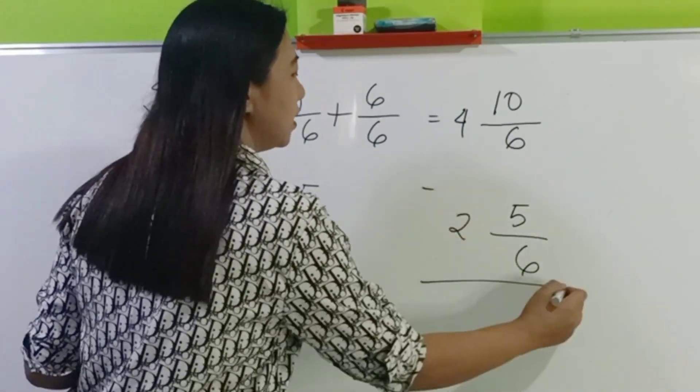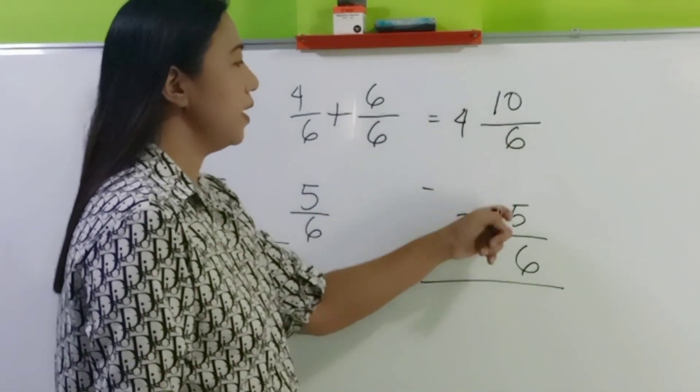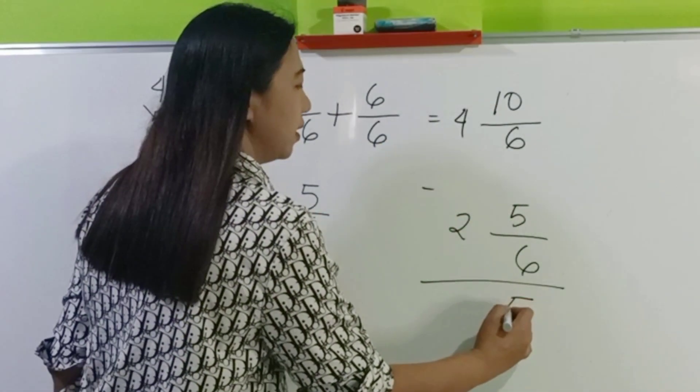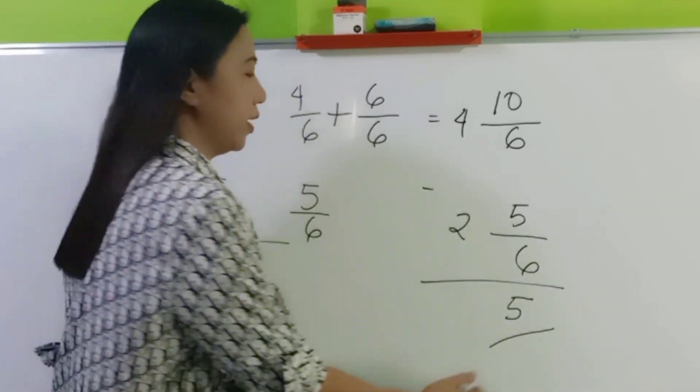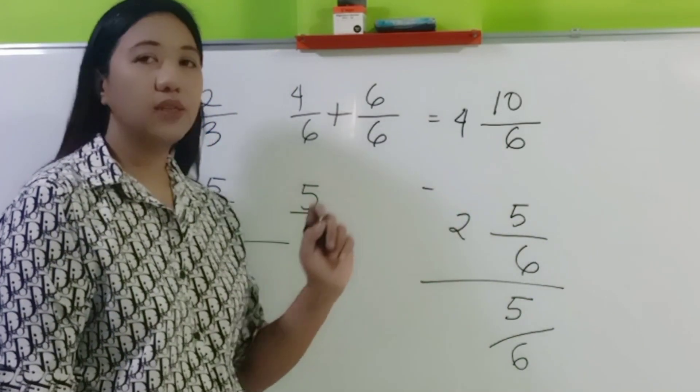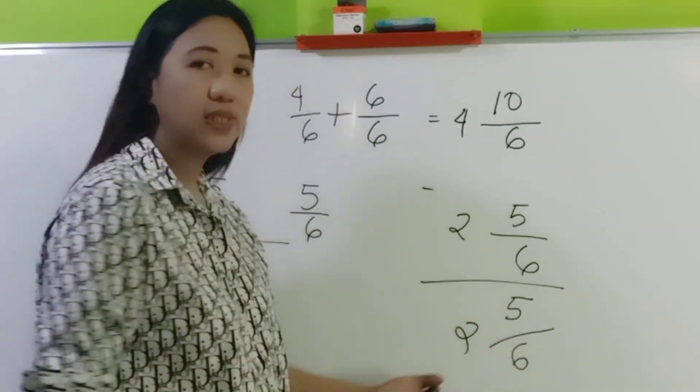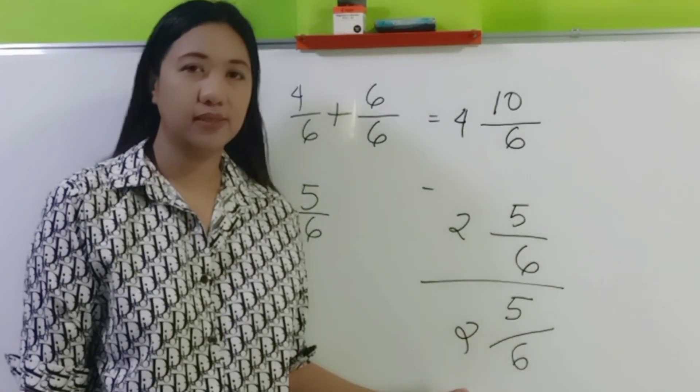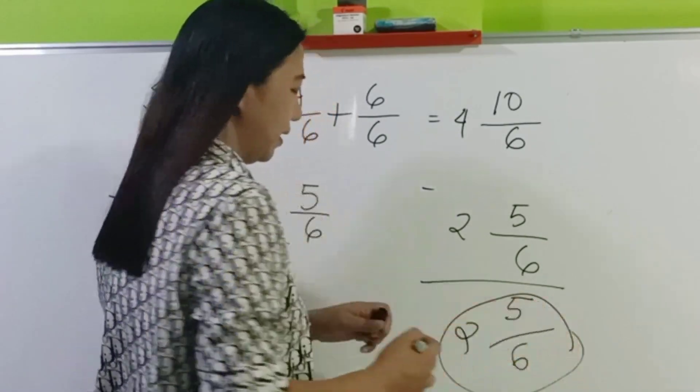We are now ready to subtract. 10 minus 5 is 5. And then copy the common denominator, which is 6. Next, subtract the whole numbers. 4 minus 2 is 2. Can we still simplify 2 and 5 sixths? Not anymore. So this is now the final answer.